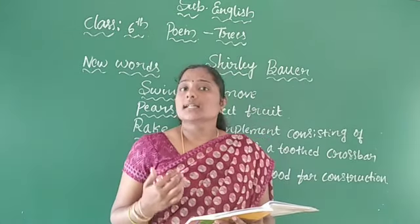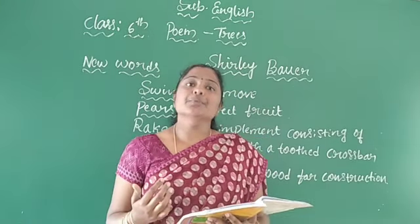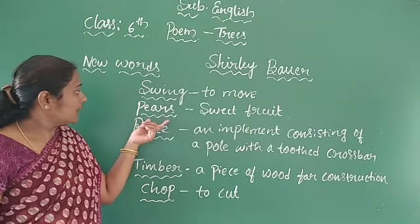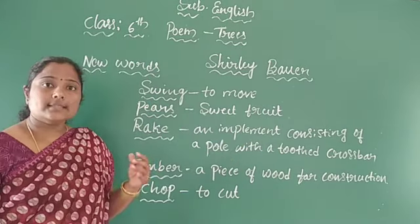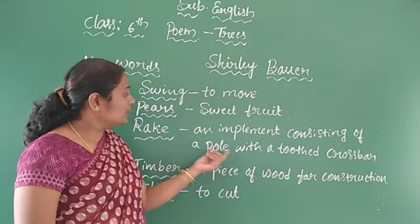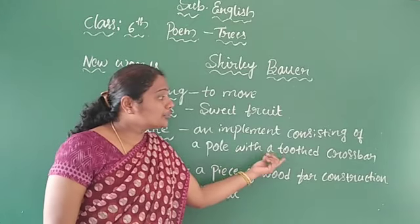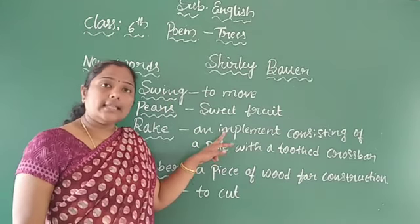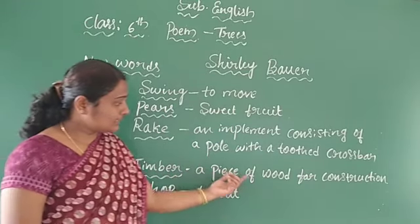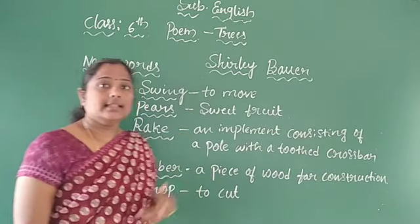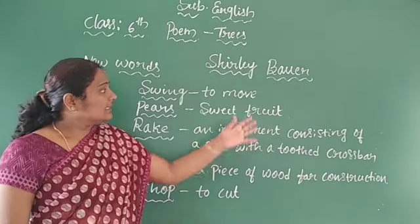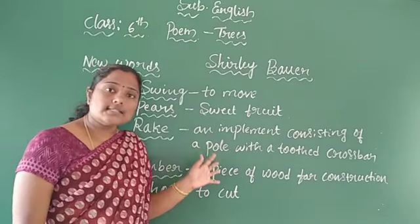Before going to the explanation, let me discuss about the new words. First, swing means to move. Next, pear means sweet fruit. Next, rake — it means an implement consisting of a pole with a toothed crossbar; an implement means a tool. Next, timber means a piece of wood for construction. Next, chop means to cut. These are the new words in this poem.